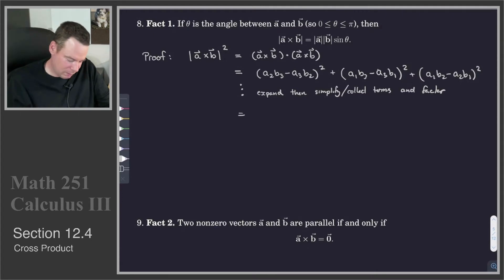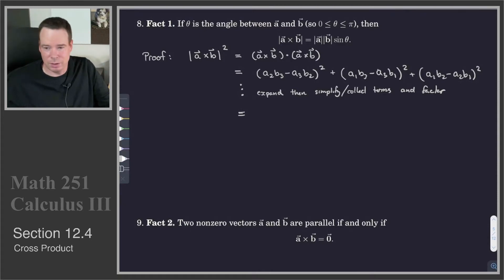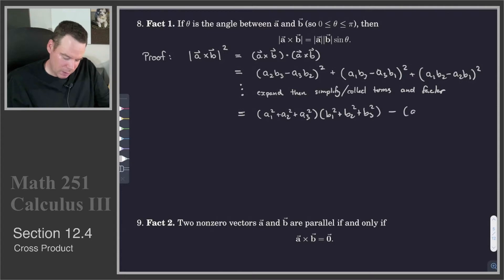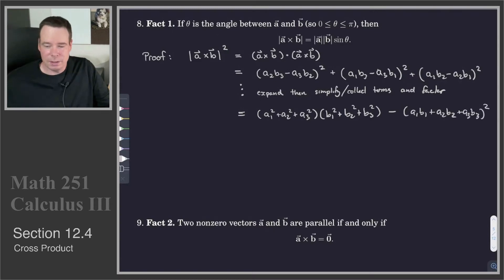After a bunch of algebraic manipulation, I'll give you the end result. It's easy to verify these are equal by expanding both sides and checking all terms match. What we get is: (A1² + A2² + A3²)(B1² + B2² + B3²) minus (A1B1 + A2B2 + A3B3)², and you can verify this equals the expanded sum of squared cross product components.